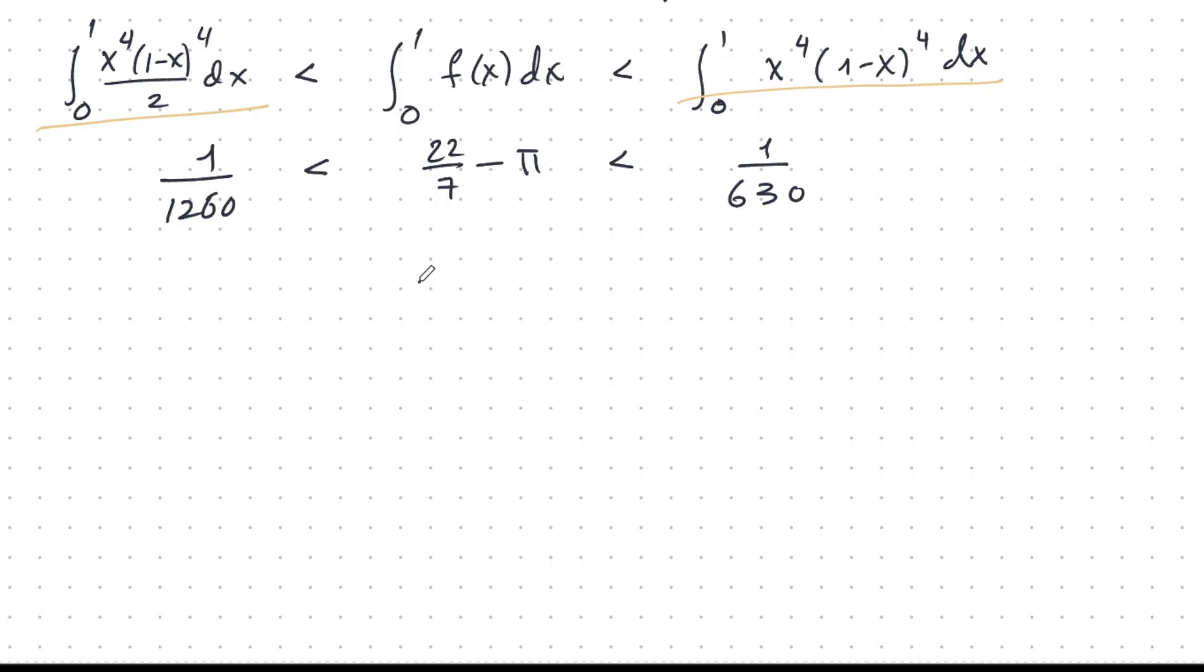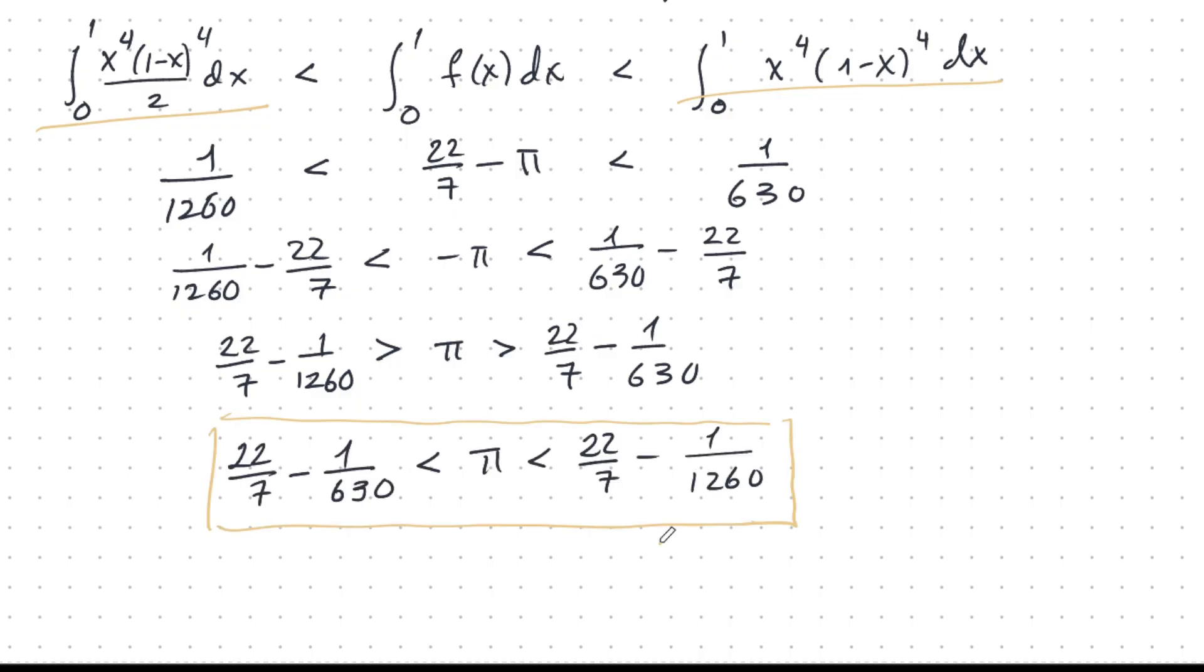Now let's move things around a bit. I subtract every one of these by 22 over 7. Now I multiply by minus 1. That looks a bit counterintuitive because I have these inequalities pointing in a funny way. So let me rewrite that. And there you have it. Quite an amazing result. We not only get the answer that pi is less than 22 over 7, we get something a lot stricter than that here.